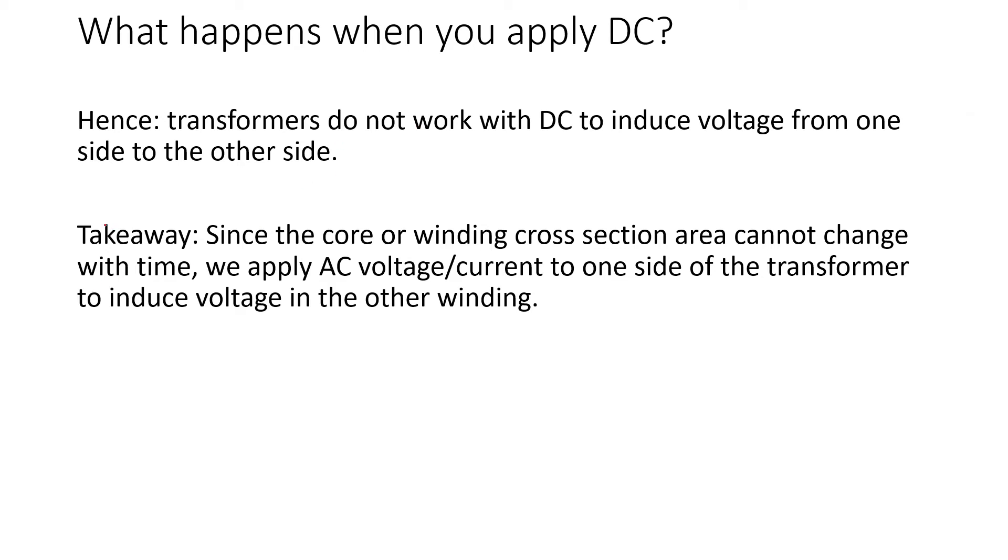So the takeaway is: since the core or winding cross-section area cannot change with time, we apply AC voltage or current to one side of the transformer to induce voltage in the other one, especially for two-winding transformers. I'm just drawing a single phase.